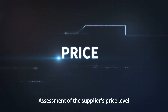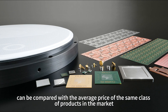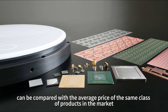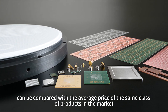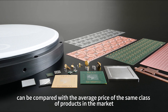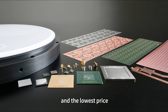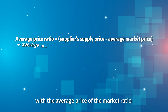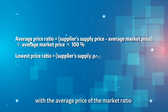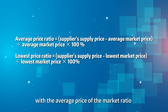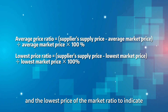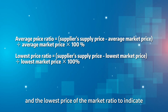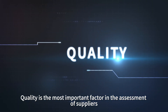Assessment of the supplier's price level can be compared with the average price and the lowest price of the same class of products in the market, using the ratio to market average price and ratio to market lowest price as indicators.